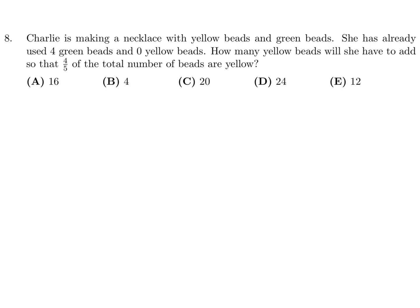Charlie is making a necklace with yellow beads and green beads. She has already used 4 green and 0 yellow. How many yellow beads will she have to add so that 4/5 of the total number of beads are yellow? So 4g and 0 yellow initially, and then we want a situation where 4 over 5 is equal to the number of yellow over the total, which would be g plus y. And I think that is the equation. So 4 over 5, well g we already know is 4, so we can sub that in. So 4 plus y.